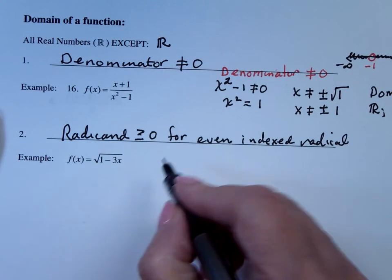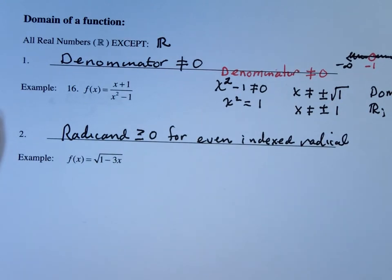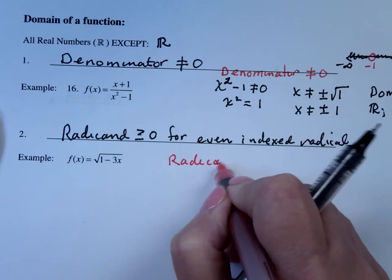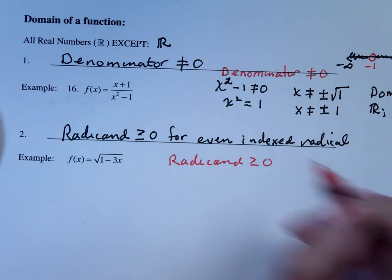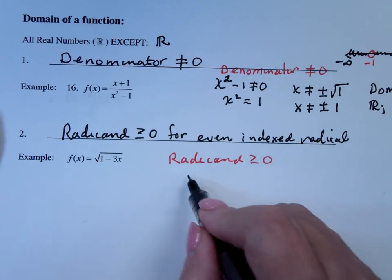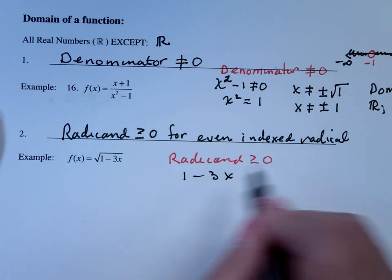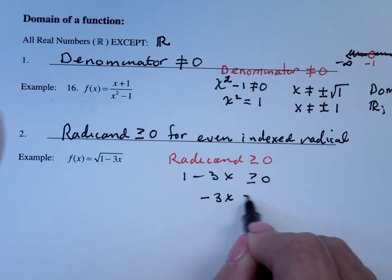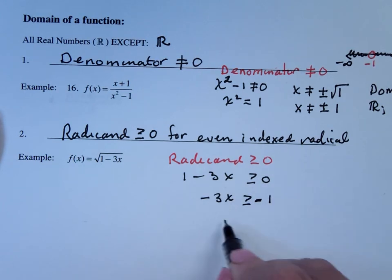So what do I know? I know that the radicand must be greater than or equal to 0. So 1 minus 3x must be greater than or equal to 0. Minus 3x is greater than or equal to minus 1. Or x is what?